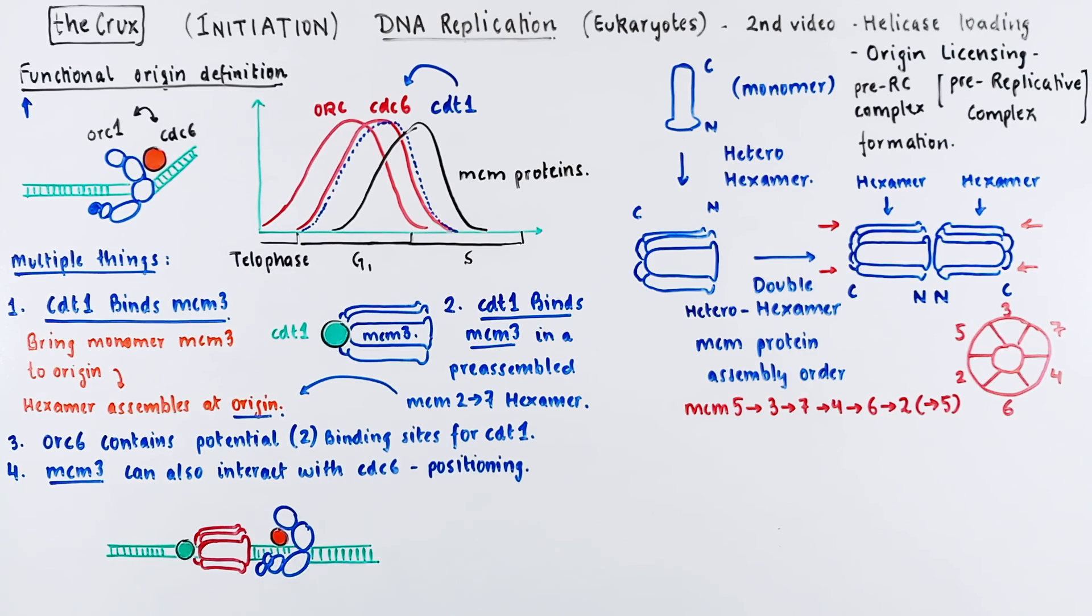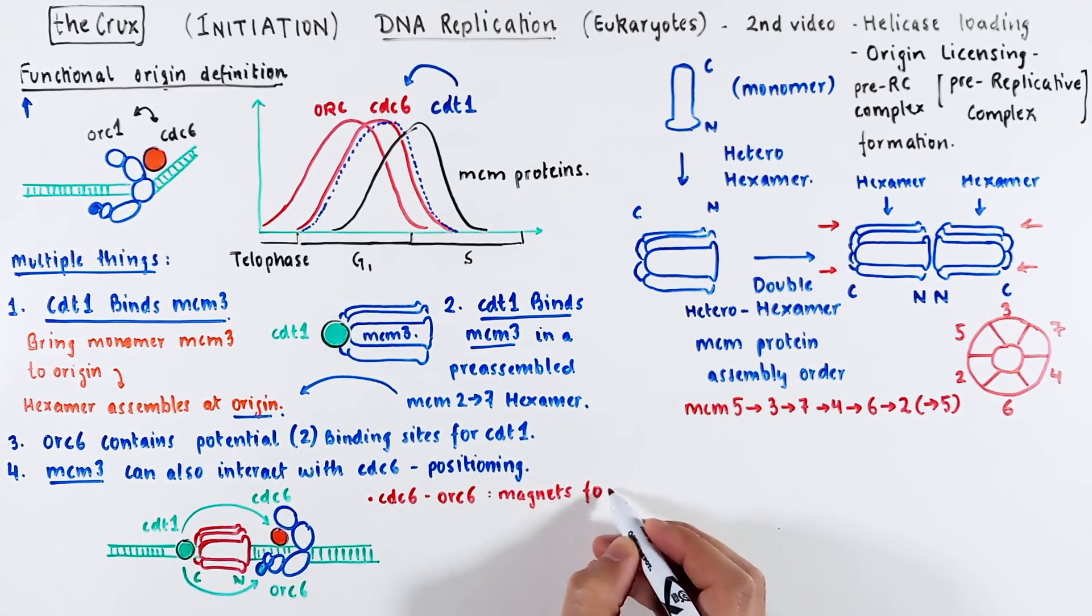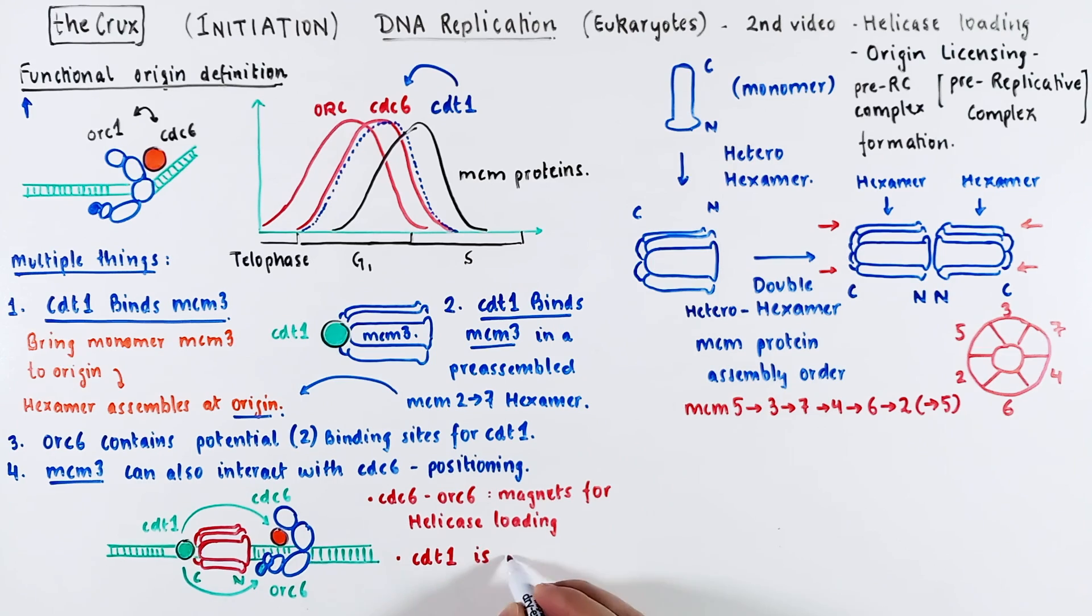In this new complex, the CDT-1 is in touch with the CDC-6 and it is physically bound to the orc-6. This is all happening in 3D space, so this cartoon diagram does not do justice to the process. In principle, the main point is that CDC-6 and orc-6 are the magnets for helicase loading spot. And the CDT-1 is the chaperone that brings the helicase to the origin.